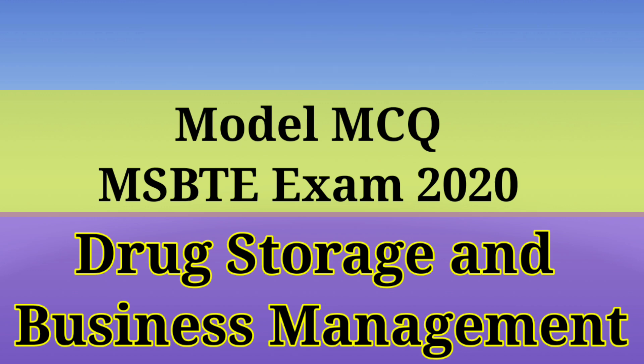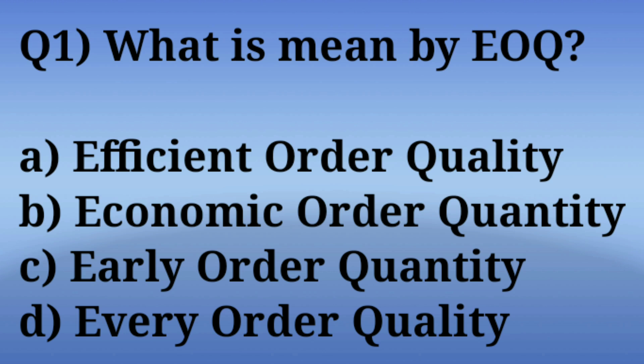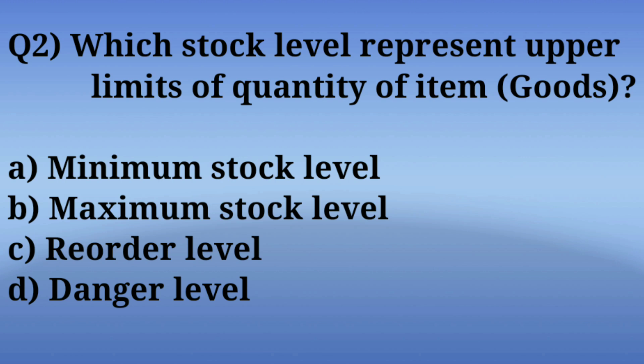We will start today's session. Question number 1: What is the full form of EOQ? The options are: A. Efficient Order Quality, B. Economic Order Quantity, C. Early Order Quality, D. Every Order Quality. The correct answer is Option B — Economic Order Quantity. EOQ is an inventory calculating method, along with ABC technique and other techniques.